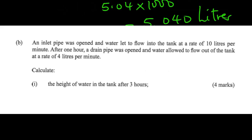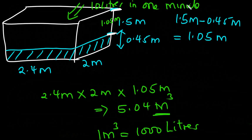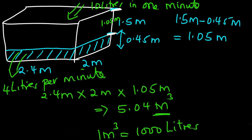Roman numeral 1: calculate the height of water in the tank after 3 hours. So there is water already in this tank. An inlet pipe is opened that allows water into this tank at the rate of 10 liters per minute. This water is allowed to flow for 1 hour, then after that a drainage pipe is opened, allowing water to flow out at the rate of 4 liters per minute.